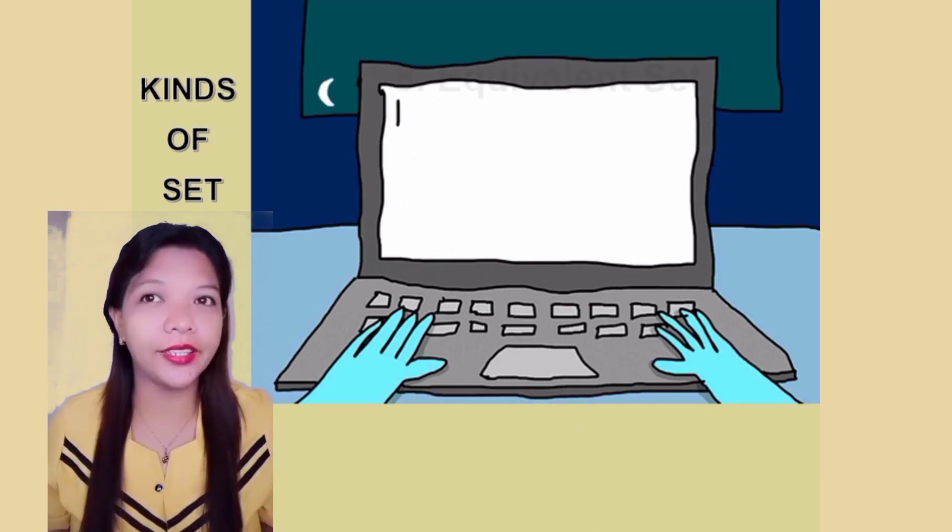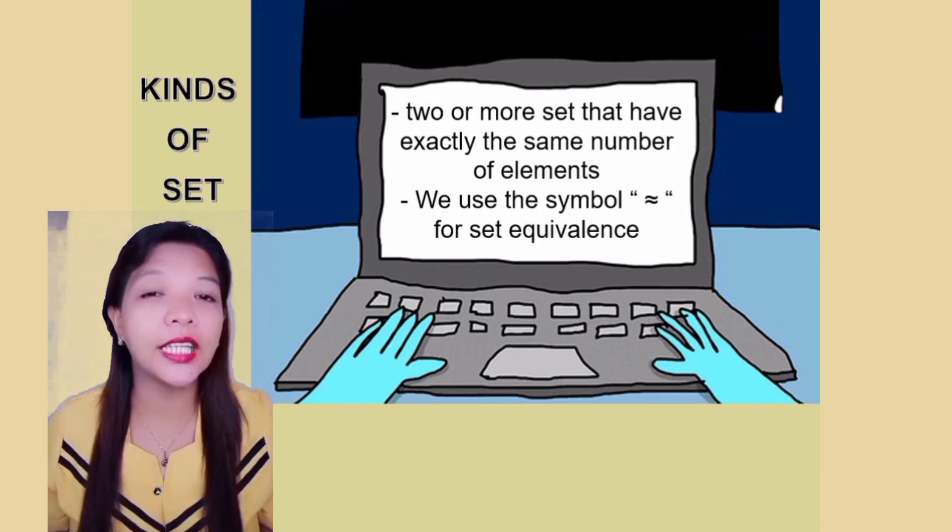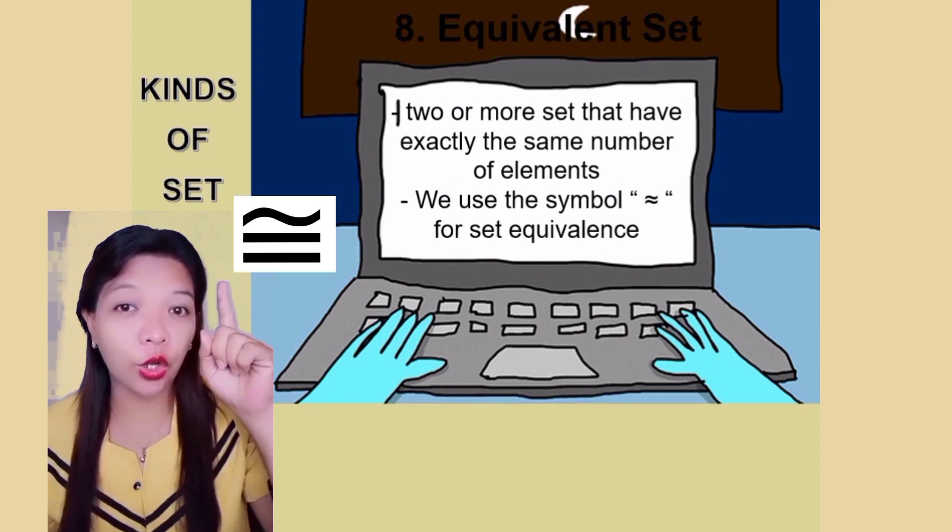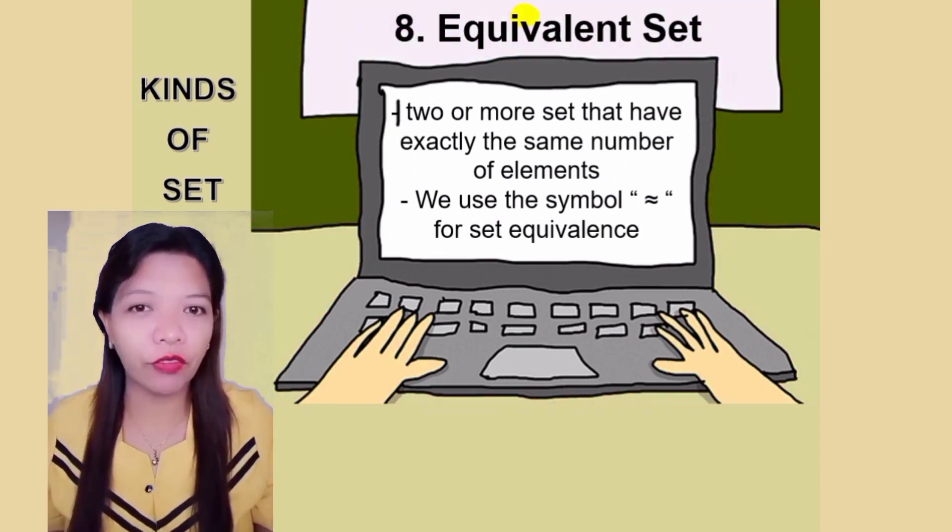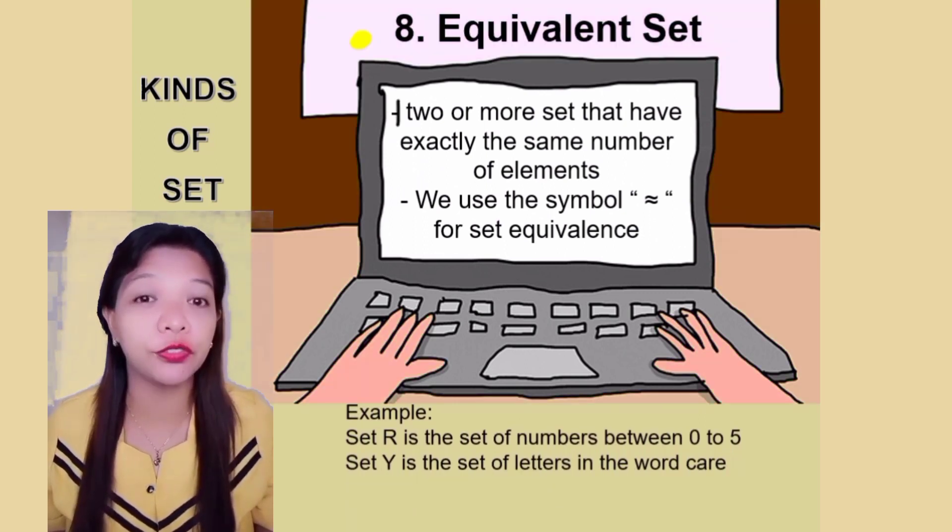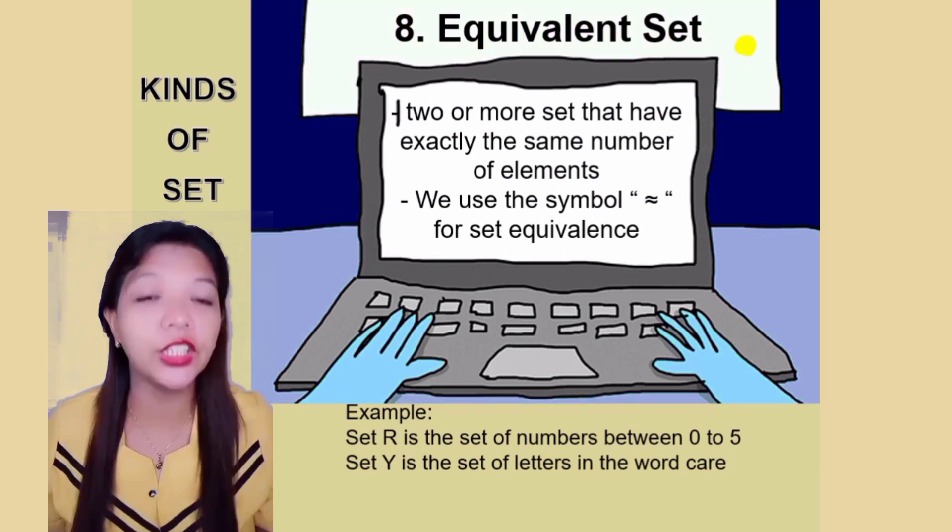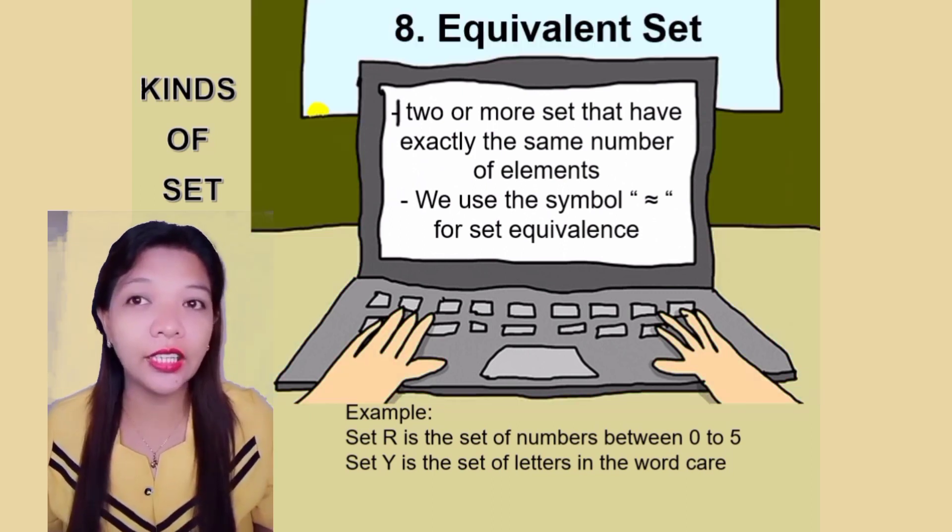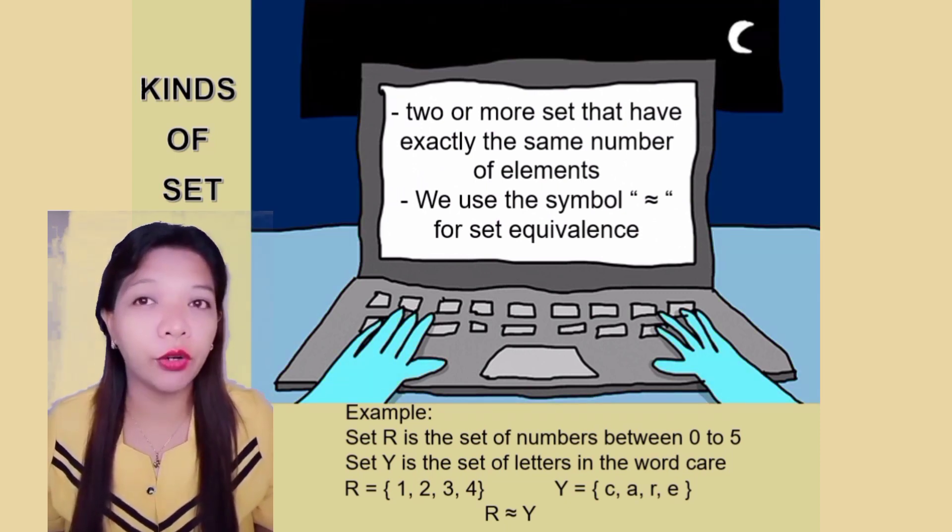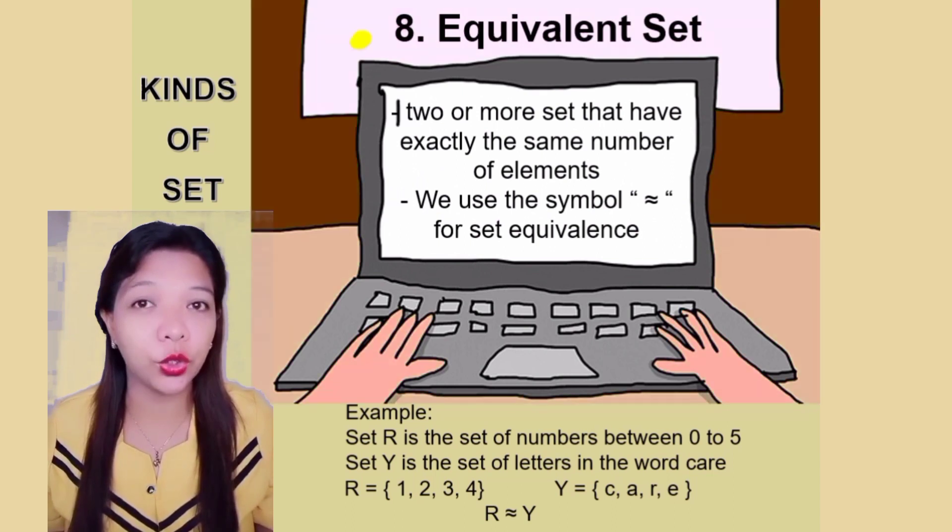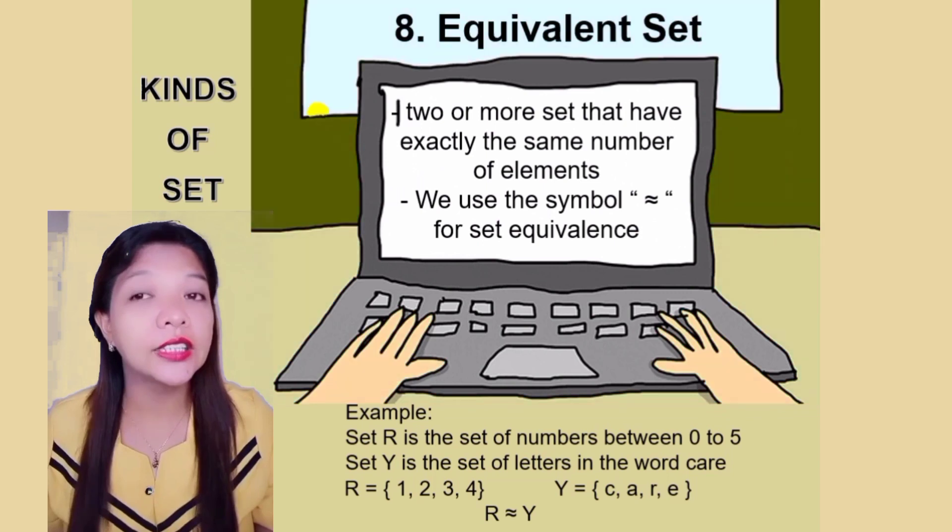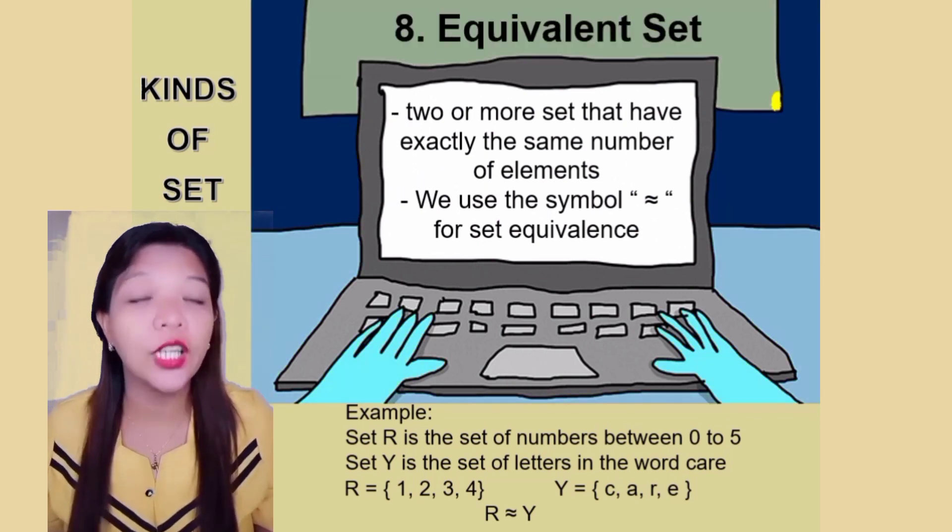Kinds of set number 8. Equivalent set. Two or more sets that have exactly the same number of elements. We use the same word, congruent, for set equivalence. Example, set R is the set of numbers between 0 to 5. Set Y is the set of letters in the word care. Set R is equal to open brace 1, 2, 3, 4, close brace. Set Y is equal to open brace C, A, R, E, close brace. Set R is congruent to set Y.